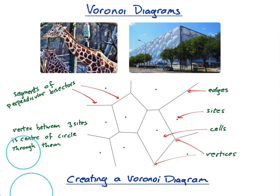The example I'm going to use to explain what a Voronoi diagram is, is schools. Imagine each of these points is a school. Some states, cities, or countries have rules where you have to go to the school closest to where you live. This can be quite a controversial policy — for example, imagine you lived here and these three nearby schools are brilliant but this one is terrible. You still have to go to the closest one, even if another might be easier to get to.